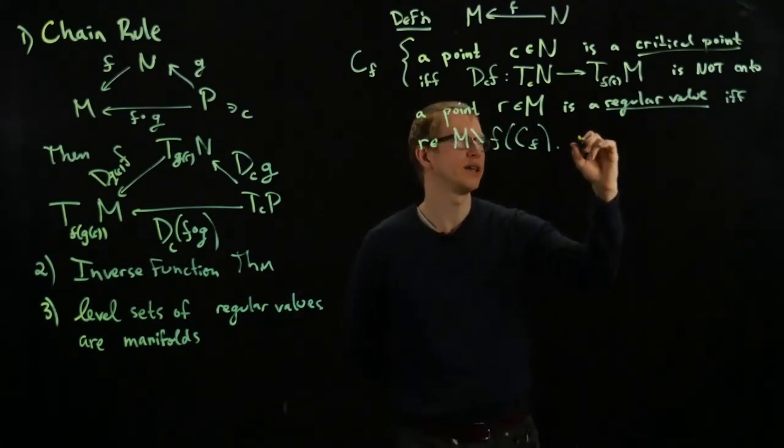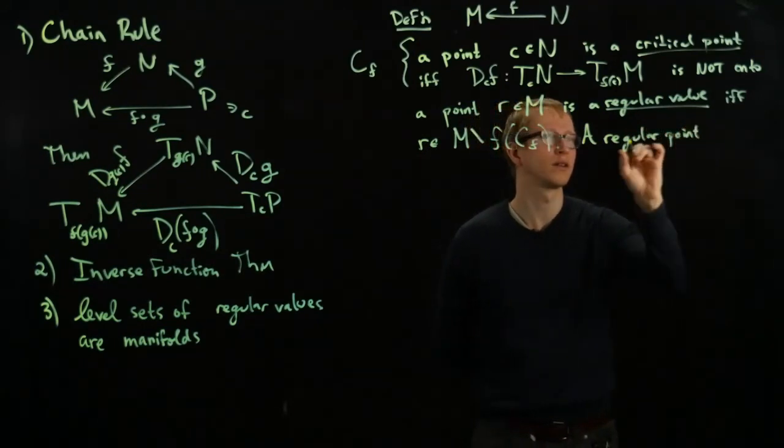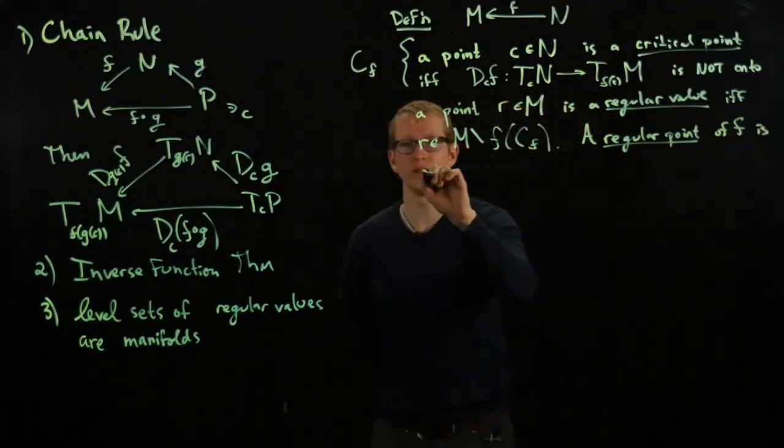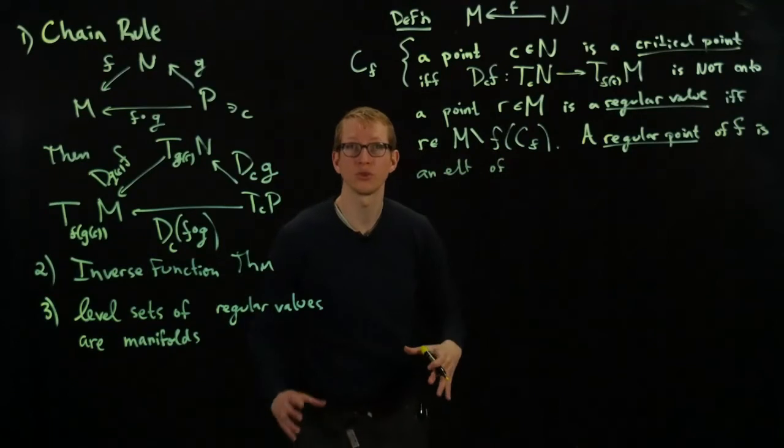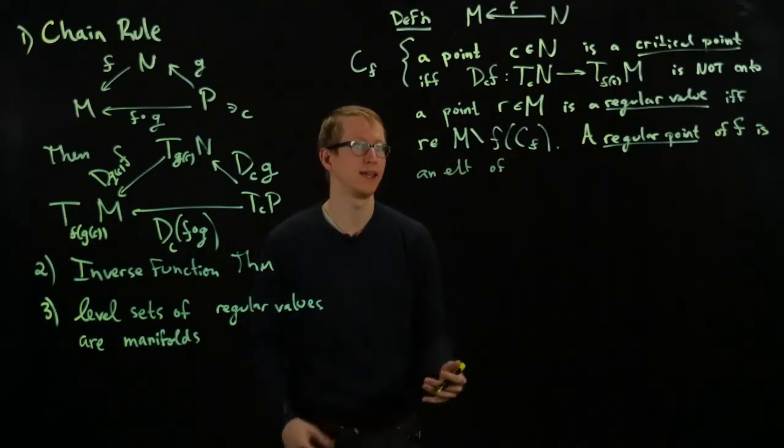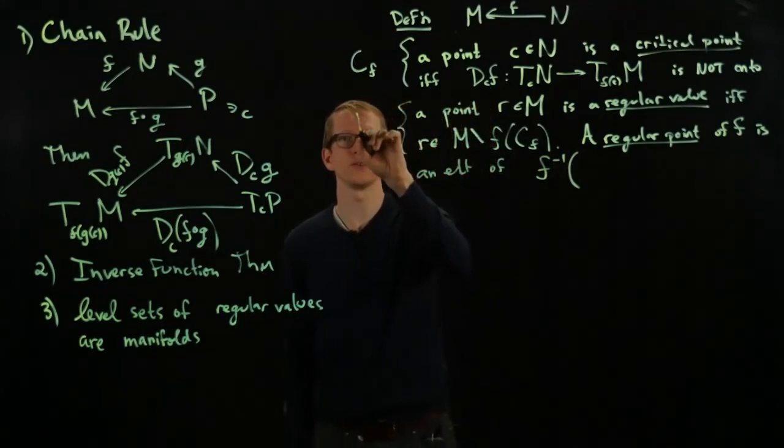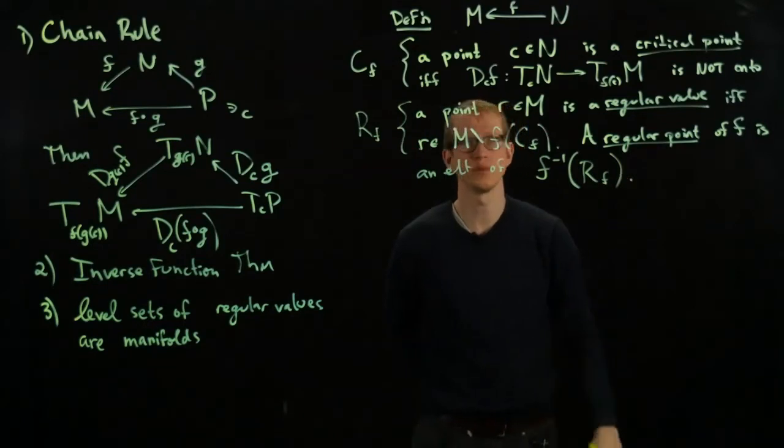And then finally, a regular point of F is an element of—now what we're doing is we're taking the regular values and pulling them back to N. So by the way, we call regular values R_F. So it's the inverse image of R_F.